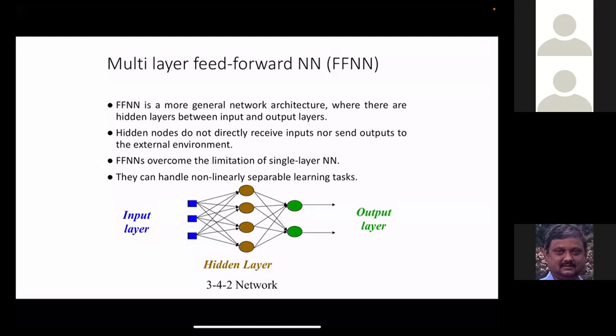The idea is clear: any non-linear boundary can be approximated because each perceptron draws a straight line, and connecting them gives a piecewise linear structure. With enough piecewise lines you can approximate any arbitrary non-linear function. If anyone has questions or doubts, please unmute and speak up — I'll be very happy to discuss.